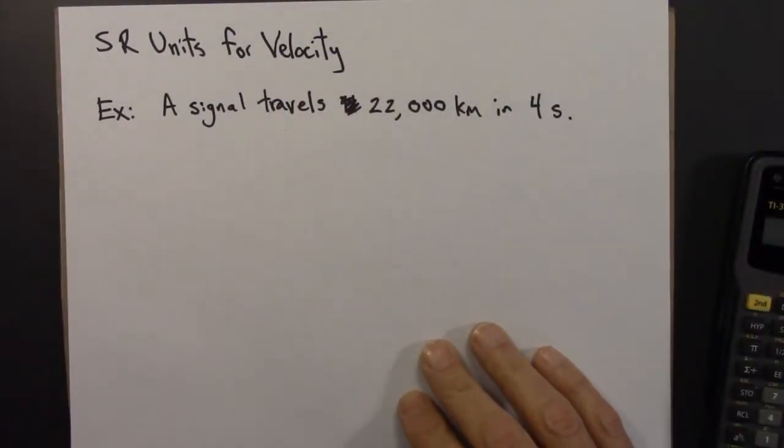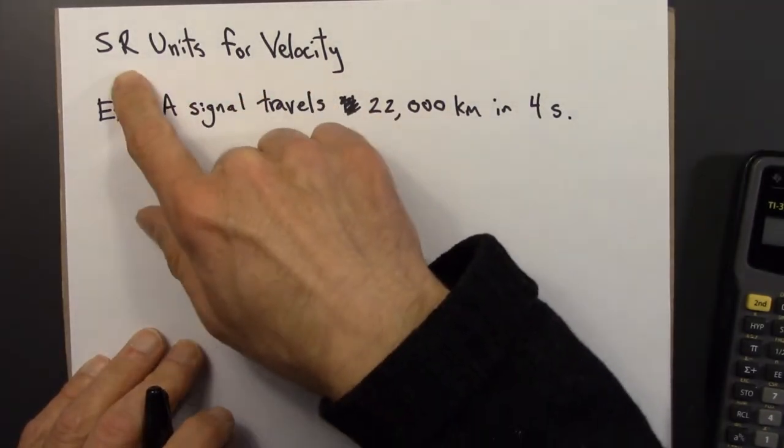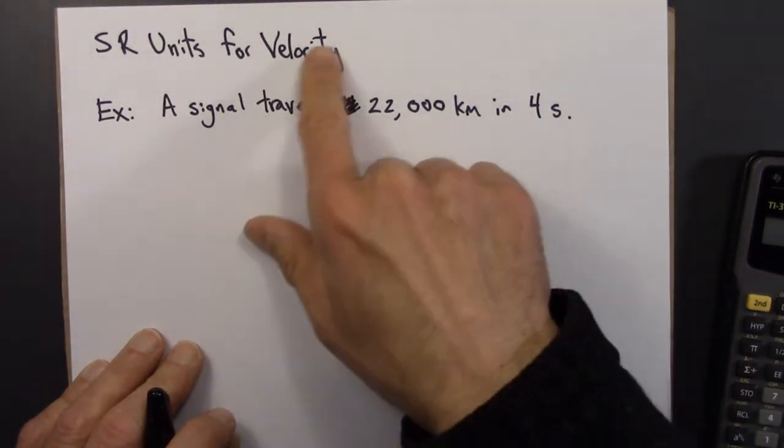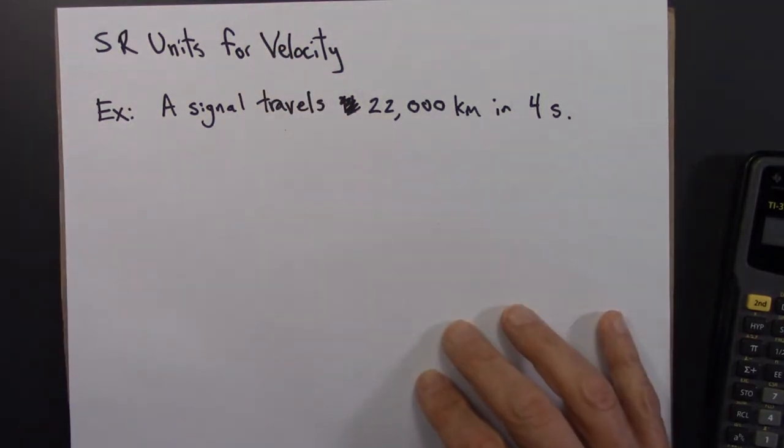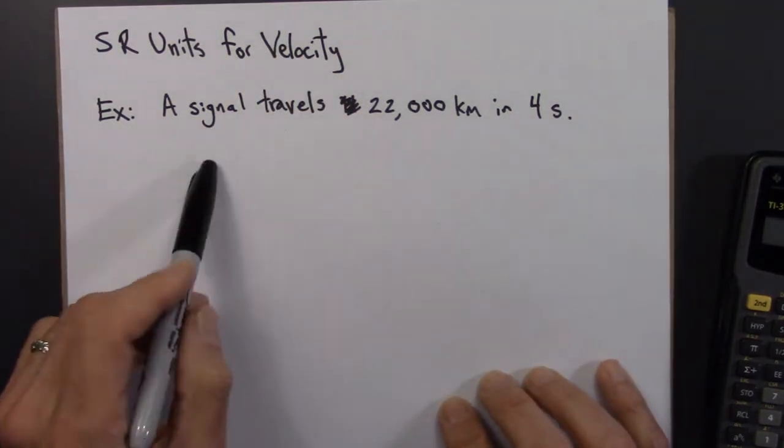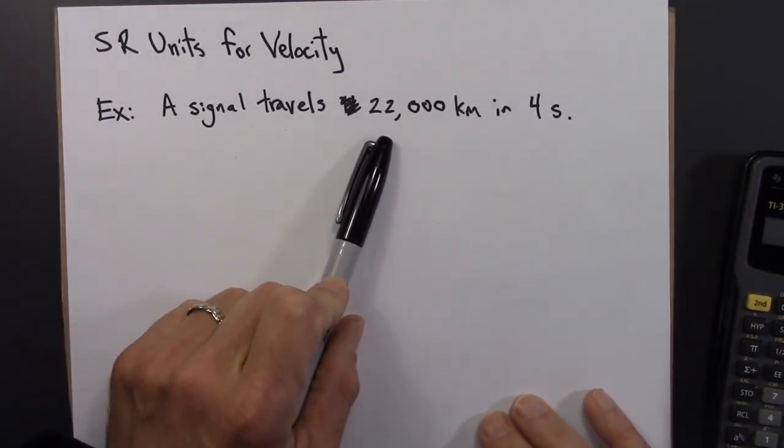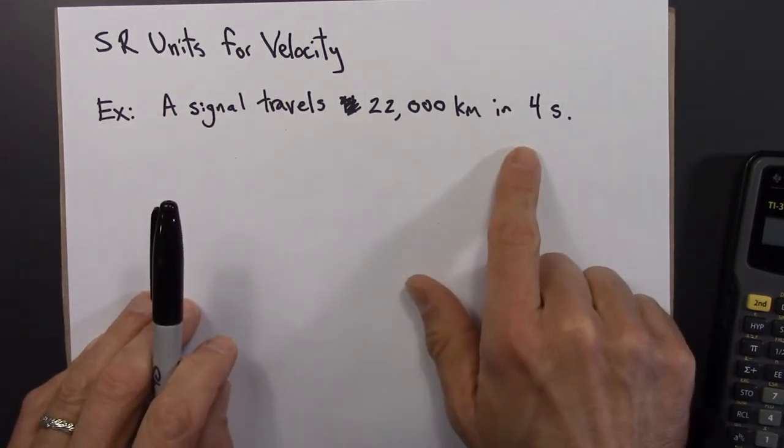So where this is headed is to think about how we would measure velocity or speed in special relativity. The last video we talked about how to measure distance in terms of time. Now we're going to think about velocity. So let me illustrate this with an example. Suppose a certain signal travels 22,000 kilometers in four seconds. And just a quick backstory on where this example is from.